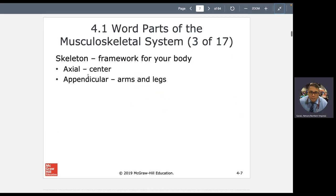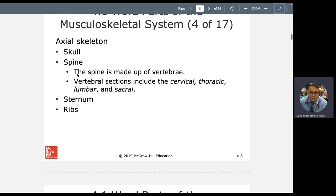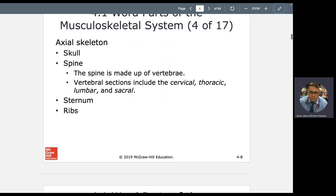Skeletal system is, there's several categories of it, but axial is everything in the middle and appendicular is your arms and legs. Your axial skeleton is part of your skull, your spine, your sternum, which is your breast bone, and your ribs.